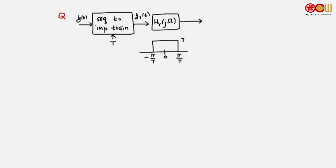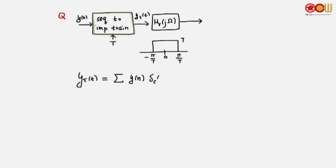Suppose we have a y[n] sequence, and this y[n] sequence is passed through a sequence-to-impulse-train converter. The output is y_s, which converts each sample to an impulse. Now y_s is passed through an ideal reconstruction filter, and we get y_r. How is y_r related to y(t) in the frequency domain?